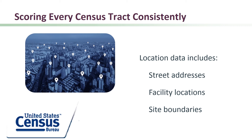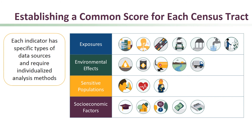This type of information can include street addresses, facility locations, or site boundaries. Because the data sources for different indicators vary, unique methods were needed to analyze each one so that a level for each indicator for every census tract in the state could be established.